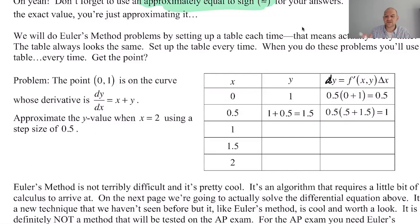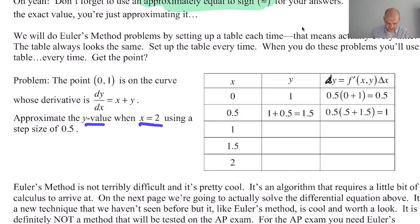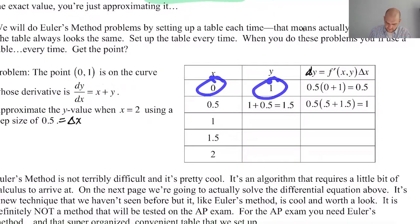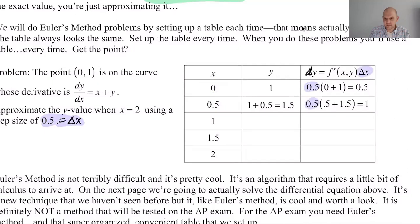This is not separable, so we don't know how to solve it just yet — but we will soon. We're going to approximate the y value when x is 2 using a step size of 0.5. So this 0.5 is delta x. The number one thing people forget is delta x — don't forget to multiply by that factor of delta x. So we put in our initial point and here is your delta x every time.